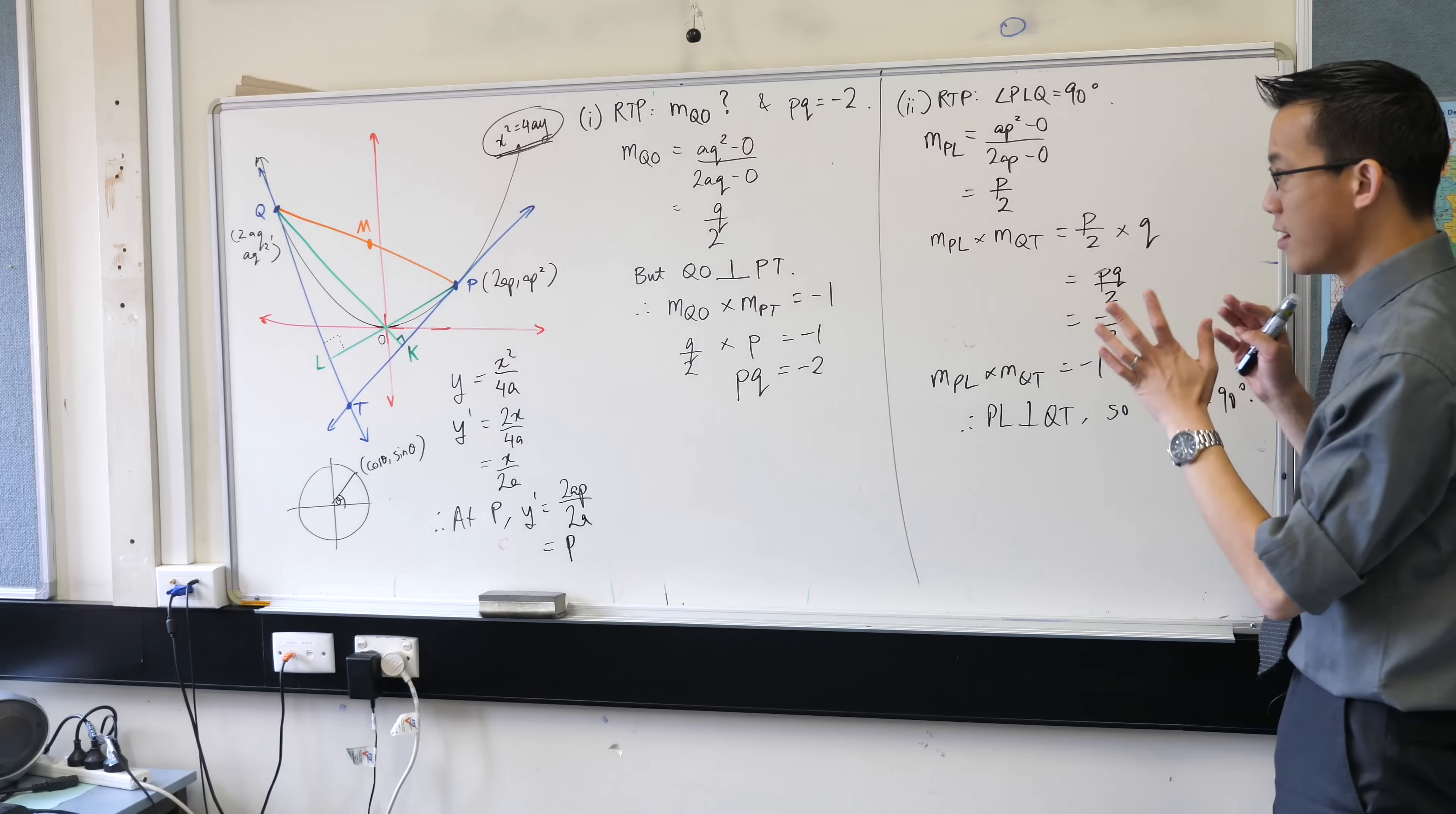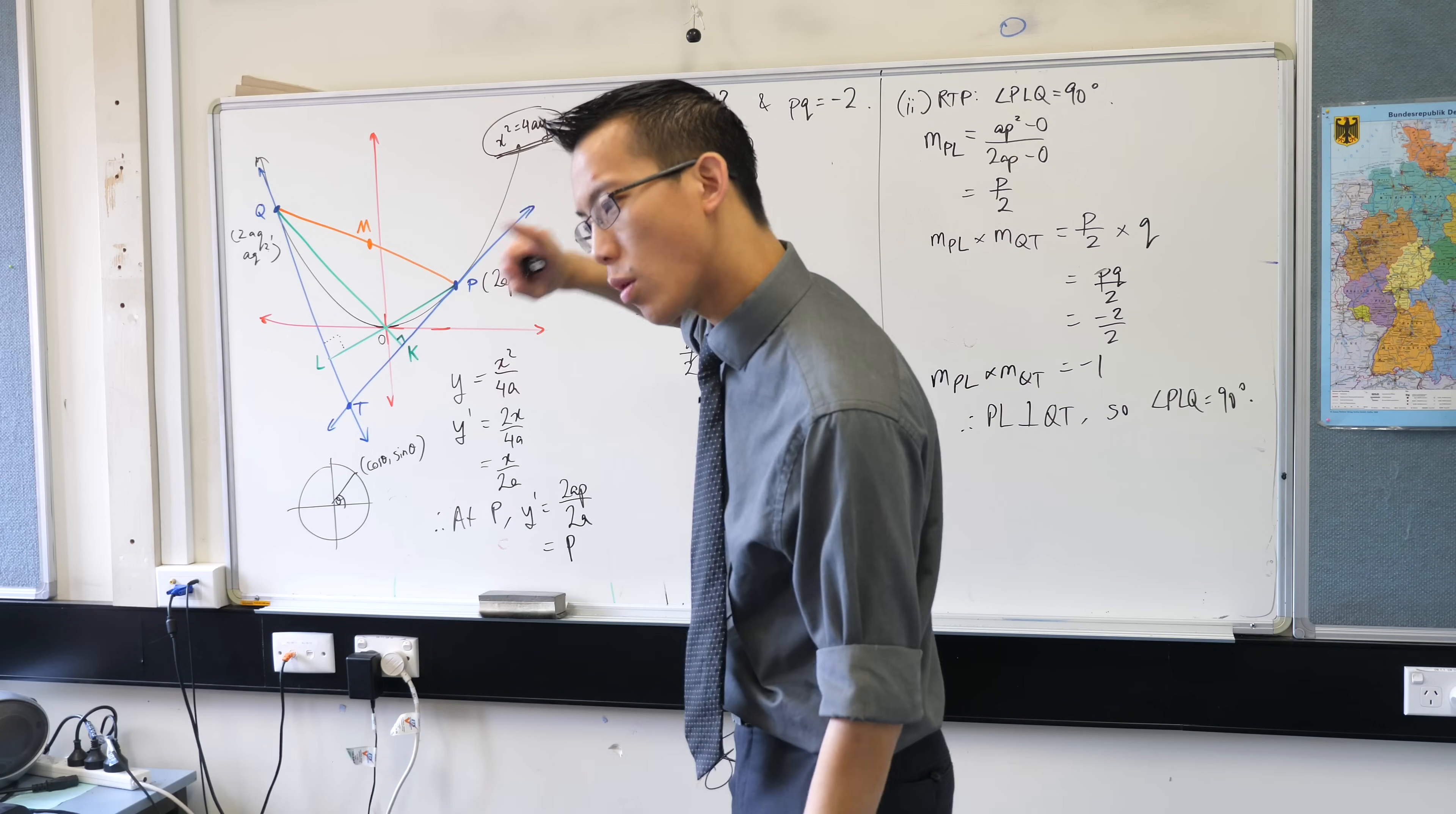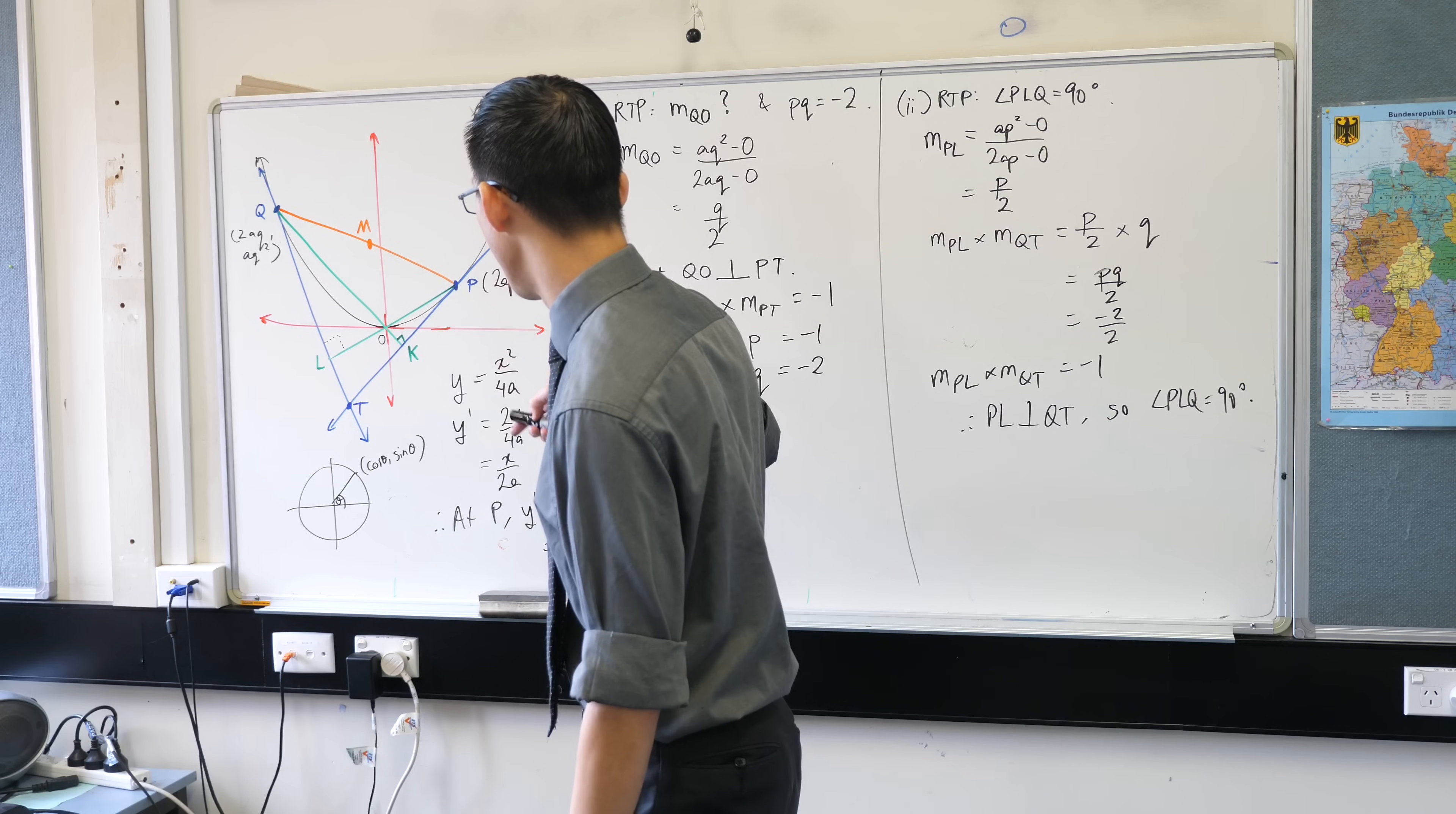So that wasn't easy but that was the warm-up to the real question which is part 3 so we're both gonna have to think about this. Let M be the midpoint of the chord PQ by considering the quadrilateral PQLK or otherwise show that MK equals ML. Alright so there's a lot there.